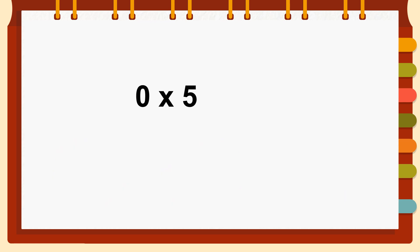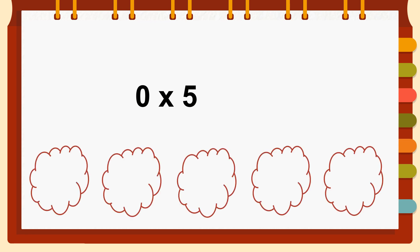Now what if we have zero times five? It still remains nothing — five groups of nothing. Over here we have five empty groups: one, two, three, four, and five. Five empty groups of nothing, so our answer remains zero. If zero is multiplied by any number, the answer is always zero.